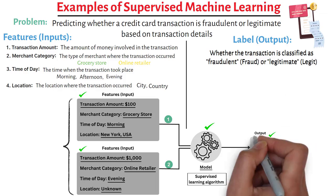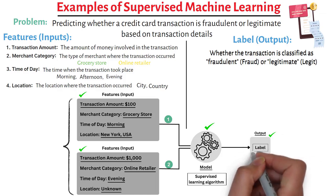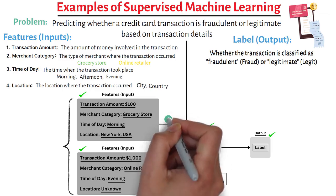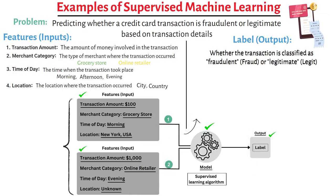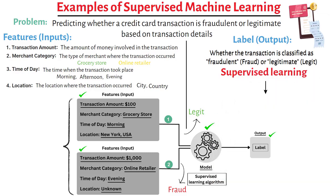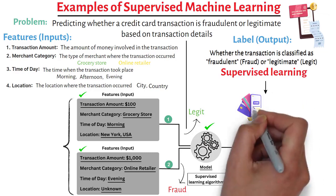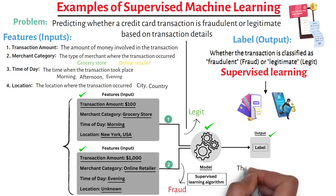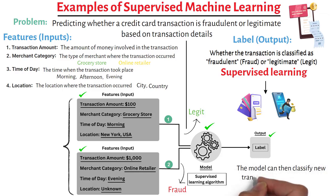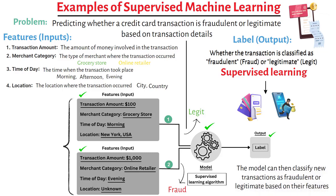On the right side, we have the output, which is the label or prediction. For the first transaction, the model predicts legit, and for the second transaction, it predicts fraud. In this example, supervised learning helps us build a model that understands the relationship between transaction details and the likelihood of a transaction being fraudulent. The model can then classify new transactions as fraudulent or legitimate based on their features.